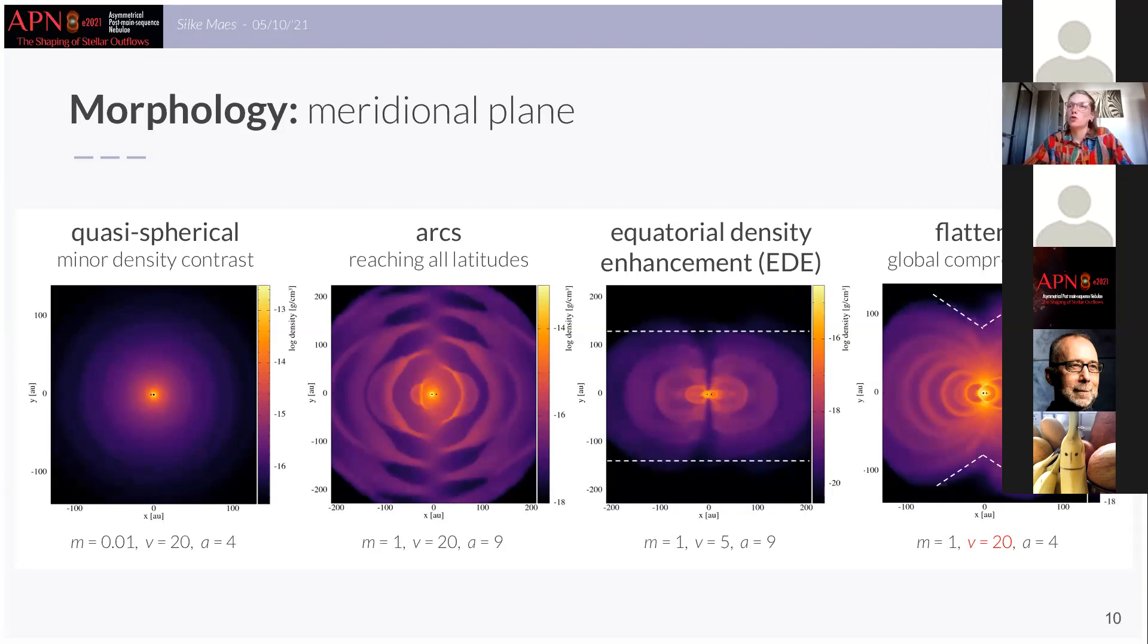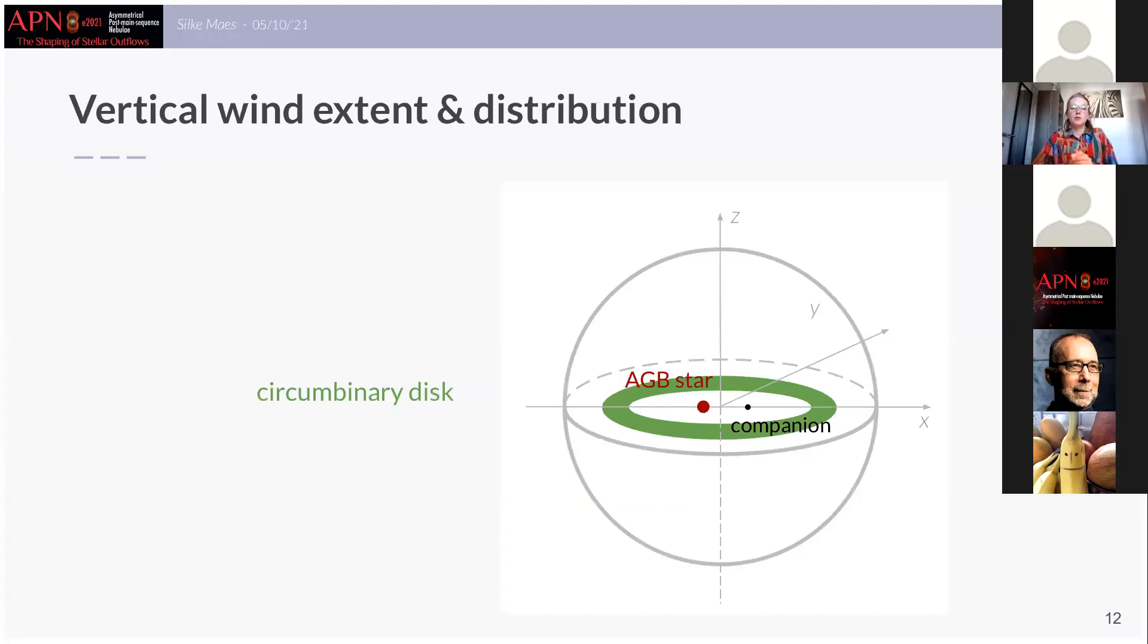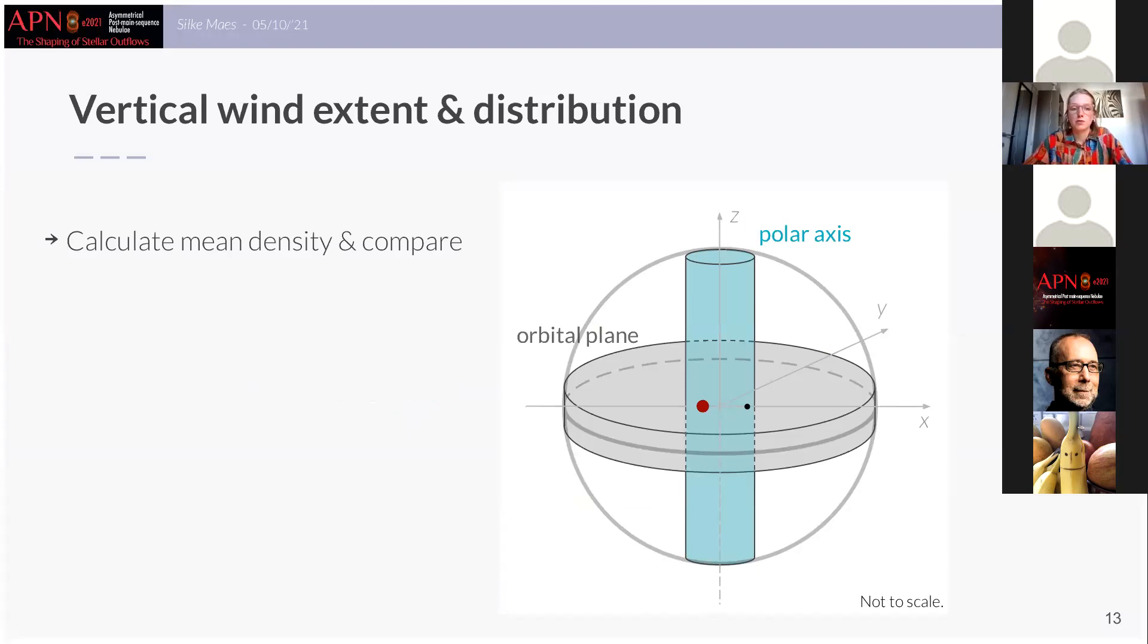So let's move on to the analysis. We have performed three different analyses in our paper. So first of all it is important that we investigate the vertical extent of the HB wind since for example around post-HB binary systems there have been observed circumbinary disks and we believe that the origin of these disks is most probably found in the HB phase and therefore this gap needs to be bridged. Now to analyze this feature I compared the mean density of different parts of the wind: the mean density in a disk-like region around the orbital plane to the mean density in a tube along the polar axis as you can see here schematically presented.